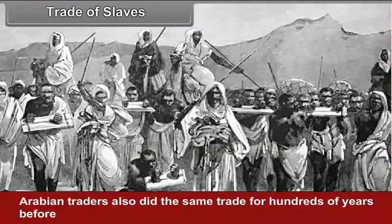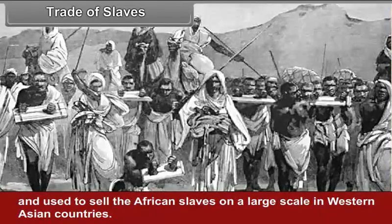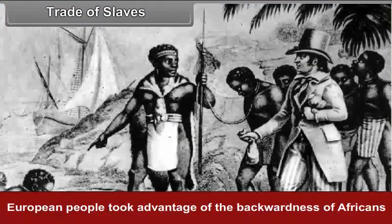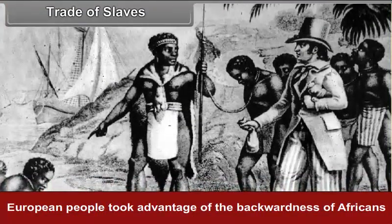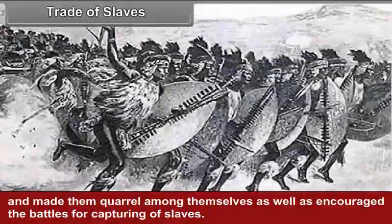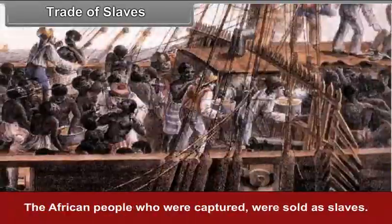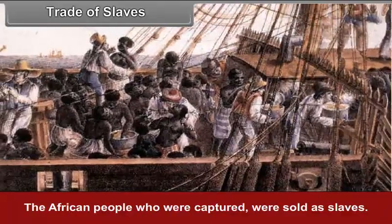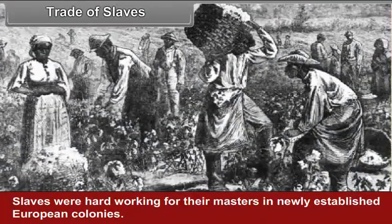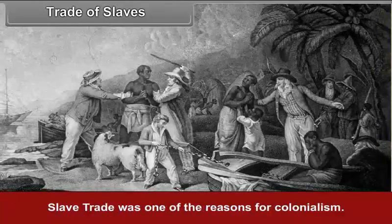Arabian traders also did the same trade for hundreds of years and used to sell African slaves on a large scale in western Asian countries. European people took advantage of the backwardness of Africans and made them quarrel among themselves, as well as encouraged battles for capturing slaves. The African people who were captured were sold as slaves, and slaves worked hard for their masters in newly established European colonies. Slave trade was one of the reasons for colonialism.